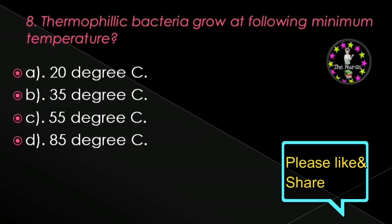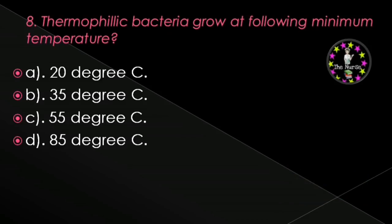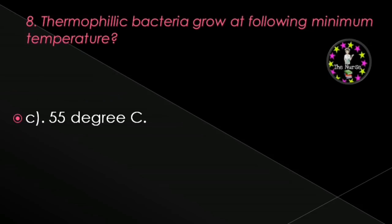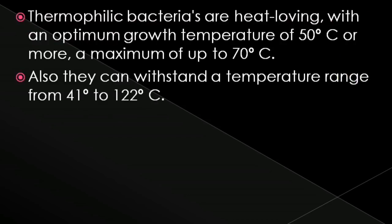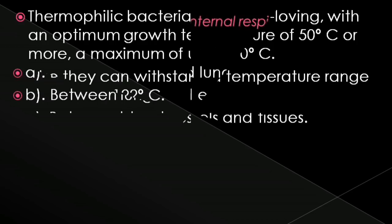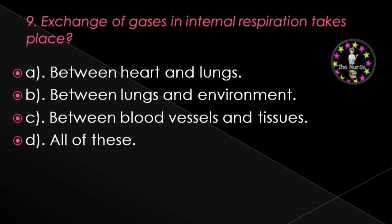Next question: Thermophilic bacteria grow at the following minimum temperature — 20°C, 35°C, 55°C, or 85°C? Correct answer is 55°C. Thermophilic bacteria are heat-loving with an optimum growth temperature of 50°C or more, a maximum of up to 70°C, and can withstand a temperature range from 41°C to 122°C.